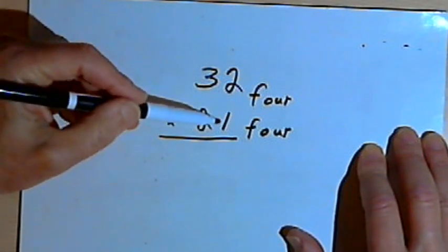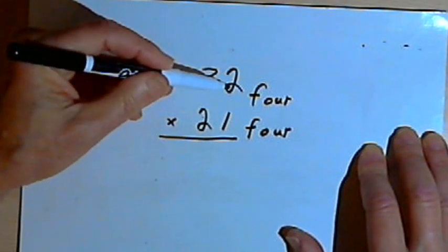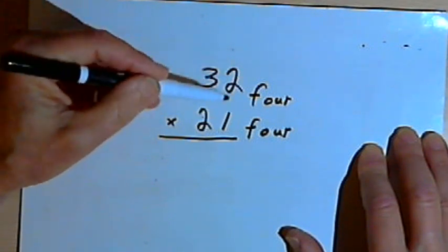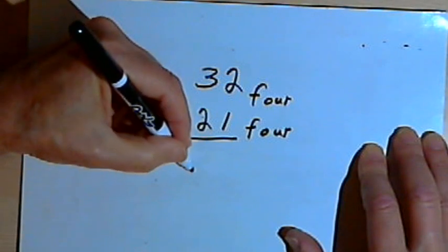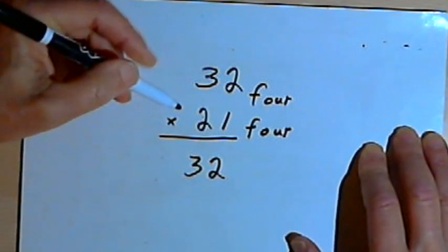Now multiplying by that 1 in 21 will be easy because multiplying by 1, no matter what base I'm dealing with, is just going to give me whatever number I'm multiplying. So I'll end up with a 32. So I'll write 32 down below that multiplication line.